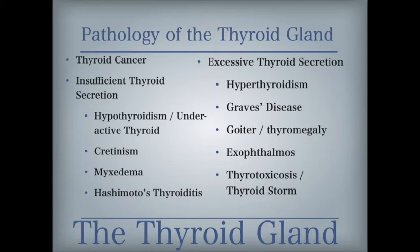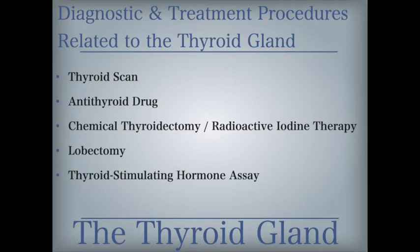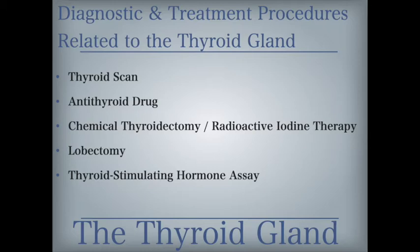Diagnostic and treatment procedures related to the thyroid gland include a thyroid scan as one means to measure thyroid function. An antithyroid drug is a medication administered to slow the ability of the thyroid gland to produce thyroid hormones. A chemical thyroidectomy, also known as radioactive iodine therapy, is the administration of radioactive iodine to destroy thyroid cells — used to treat hyperthyroid disorders such as Graves' disease. A lobectomy is the removal of one lobe of the thyroid gland — a term also used for the liver, brain, or lung. A thyroid-stimulating hormone assay is a diagnostic test to measure circulating blood levels of TSH, used to detect abnormal thyroid activity.